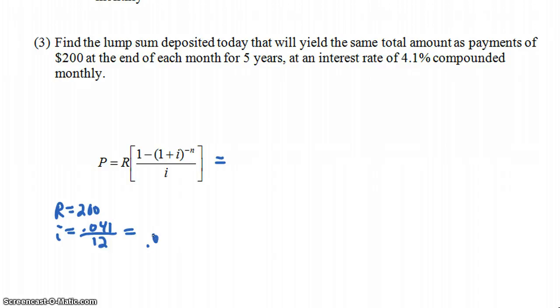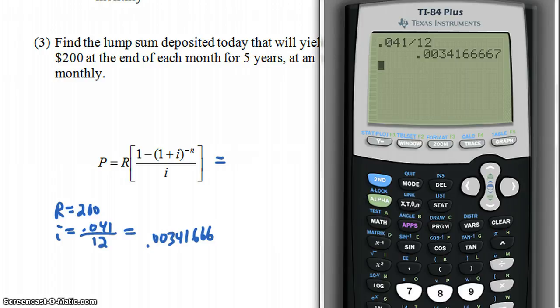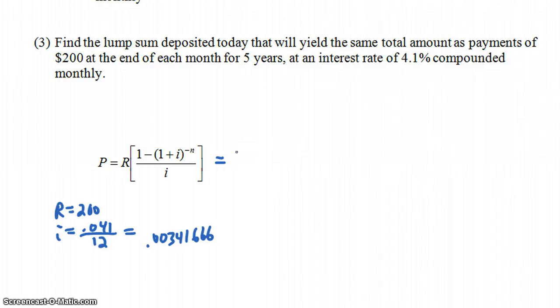So it's 0.00341. Let's just do 666. Let's have that many decimal places. Now, when we type this into our calculator, we're going to want to put 200 times, the R was the 200, times 1 minus 1 plus I, now that will be 1.00341666, to the negative N.